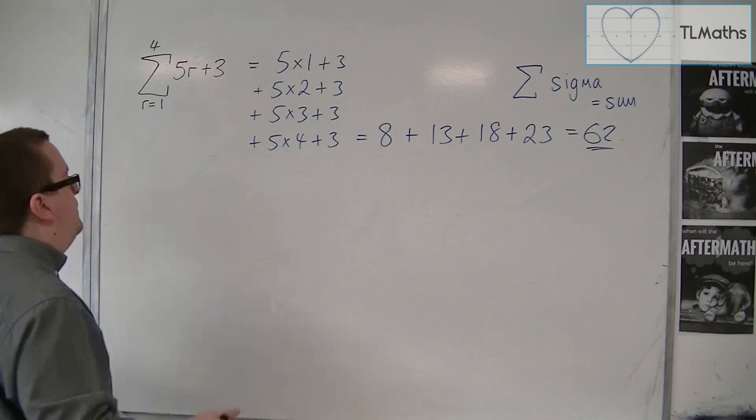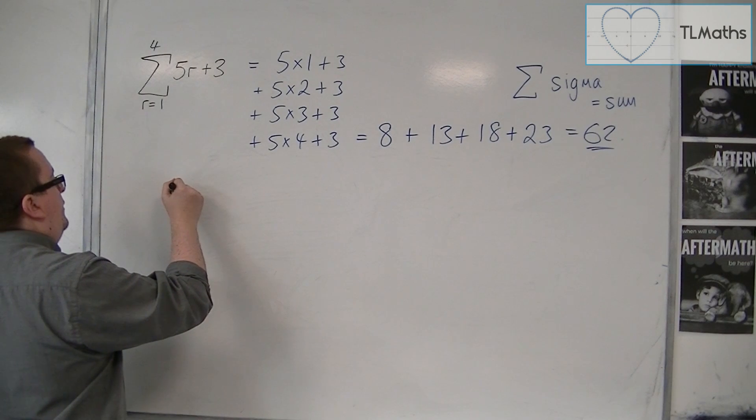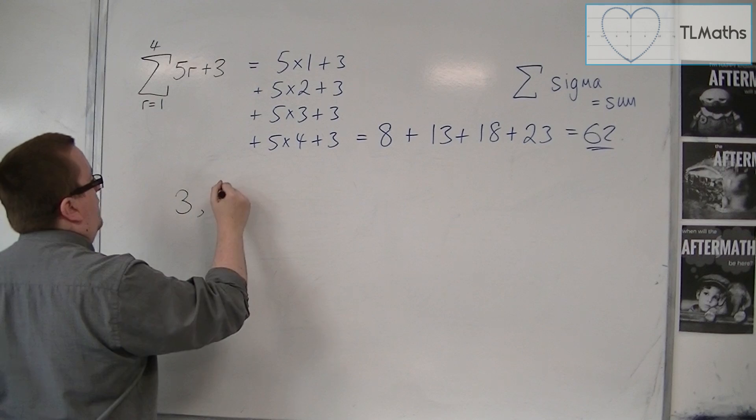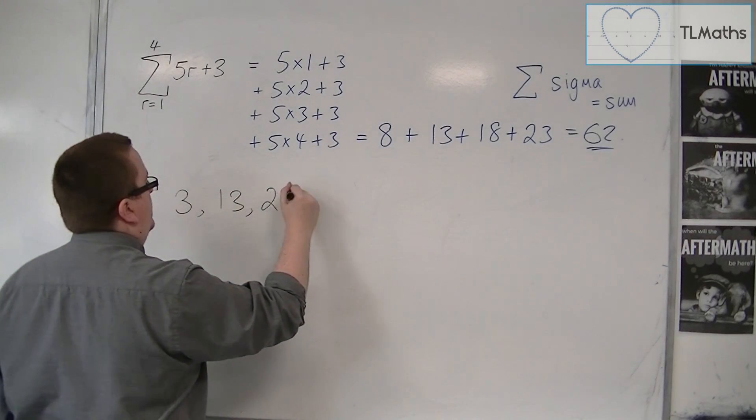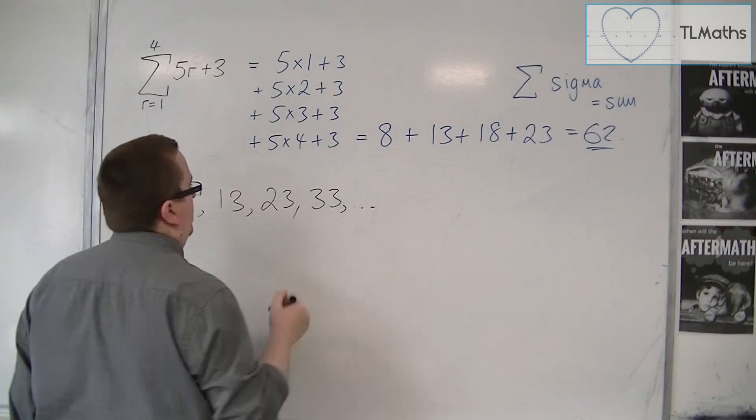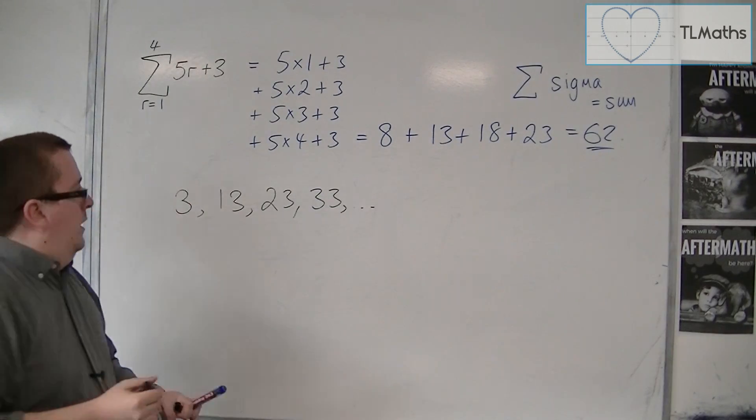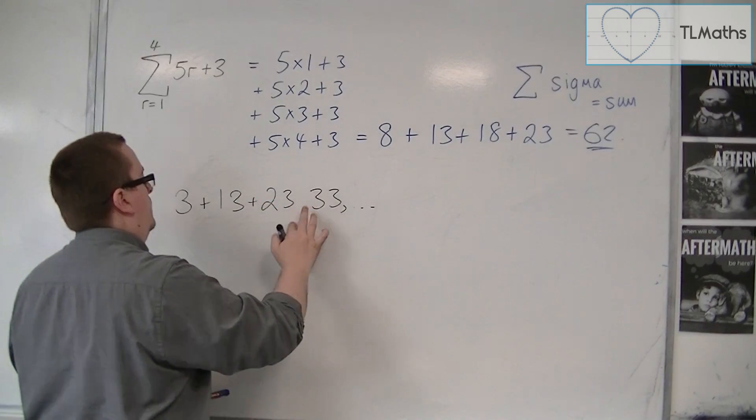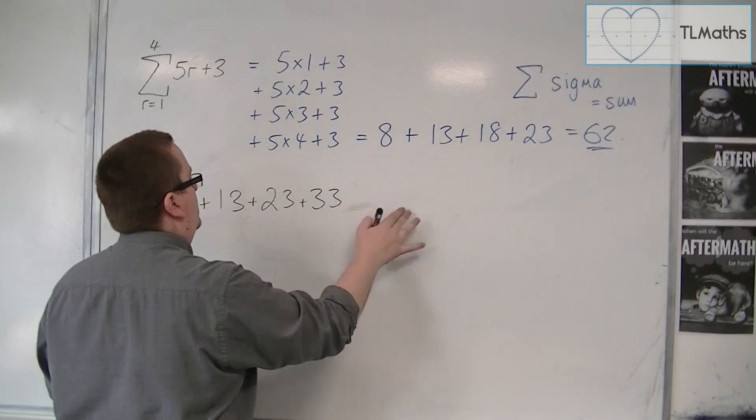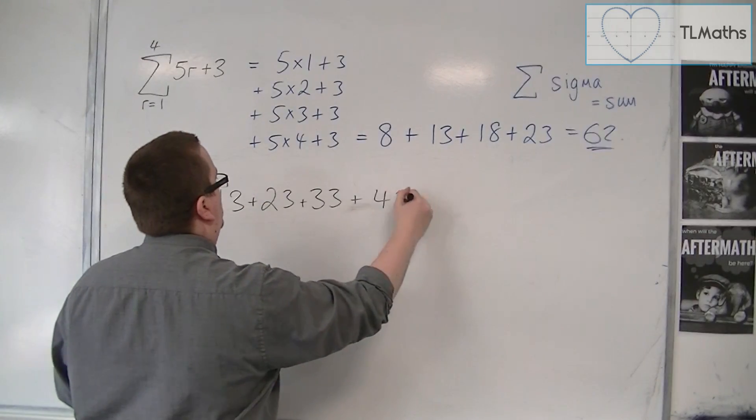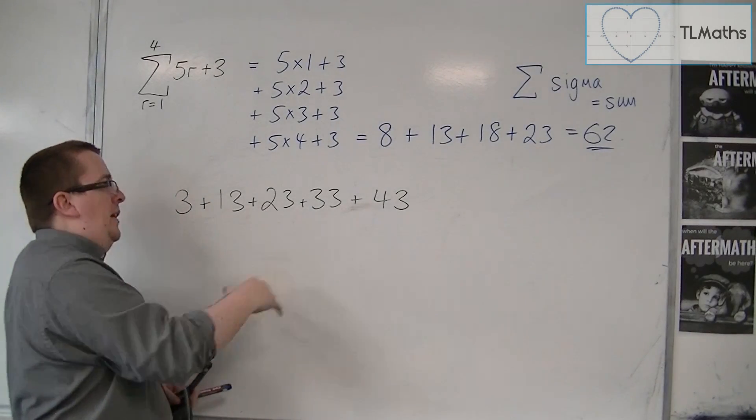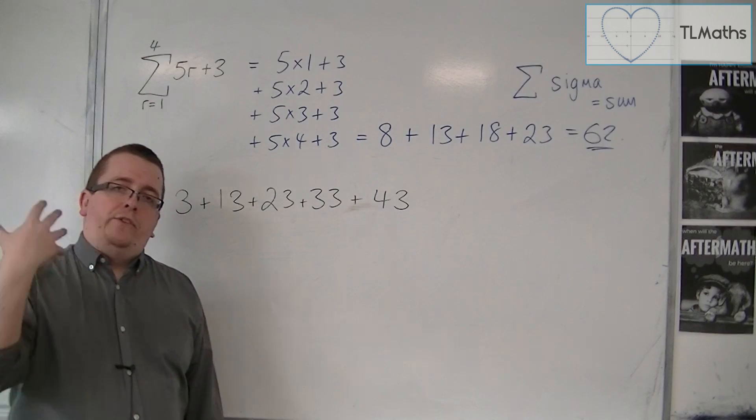So let's say I had a sequence given by 3, 13, 23, 33, etc. I want it as a sum rather. So let's go up to 43. So here is my sum, and I want to write that in sigma notation.